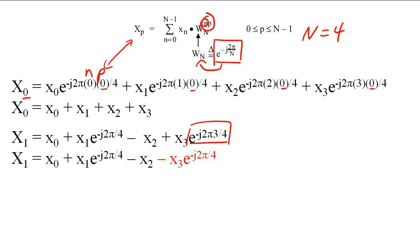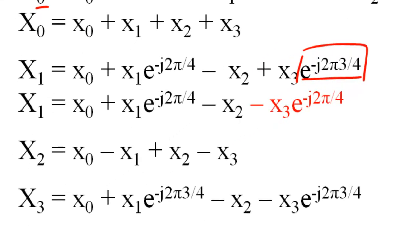Finally, by using the same method, cap X sub 2 and cap X sub 3 will look like this. If we look at all four DFT samples, we see that X sub 1 and X sub 3 always have the same W sub n components.